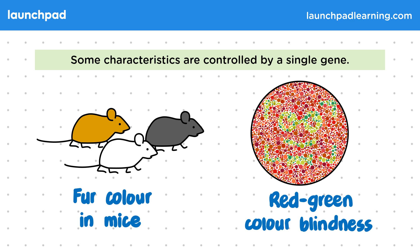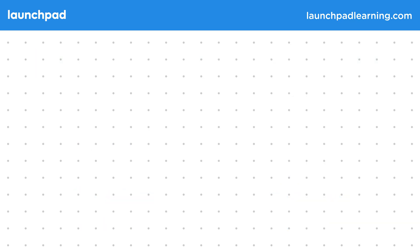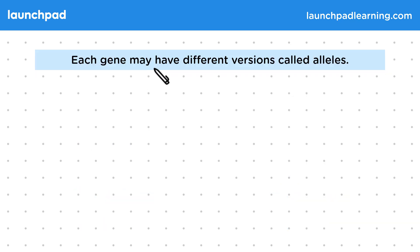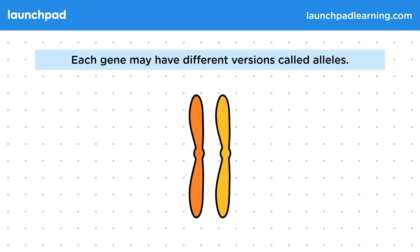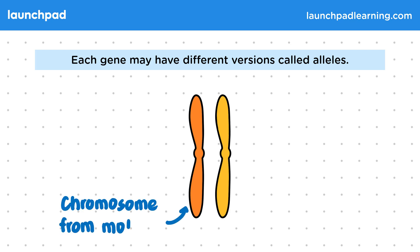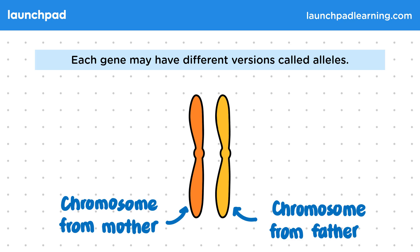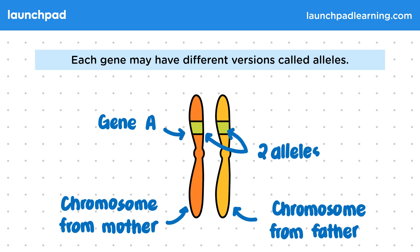So how do genes function? Each gene may have different versions called alleles. Remember that we inherit two versions of each chromosome — one from our mother and one from our father. This also means that we have two copies of each gene, for example gene A. These two copies of the same gene are called alleles.